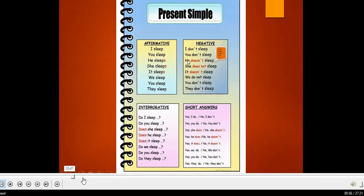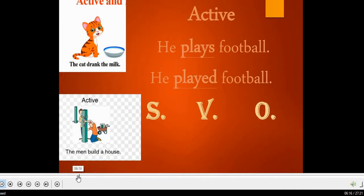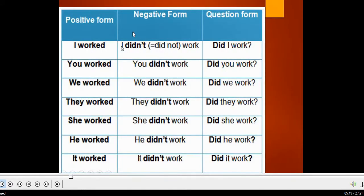Now, the past simple. For regular verbs, you add 'ed' to the verb. For irregular verbs, the verb totally changes. For example, 'work' becomes 'worked,' but 'teach' becomes 'taught,' not 'teached.' And 'buy' becomes 'bought,' 'play' becomes 'played.' So some verbs are regular with 'ed,' and some are irregular and totally change in the past tense.